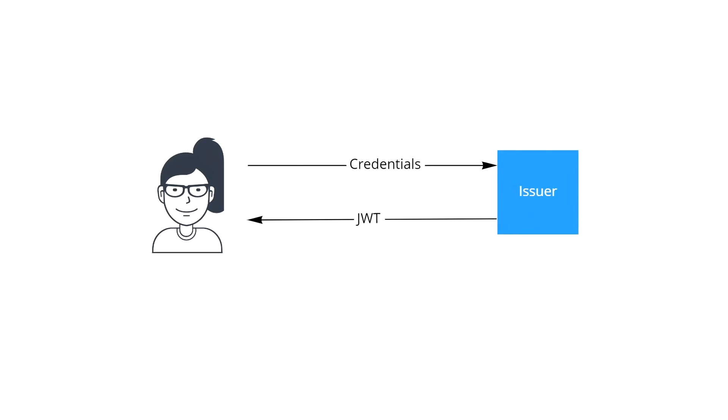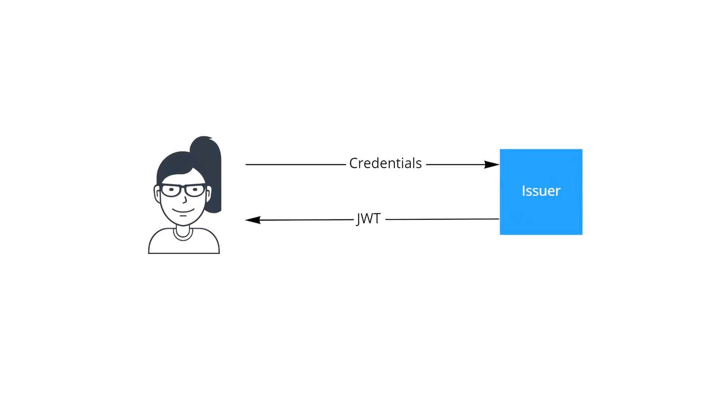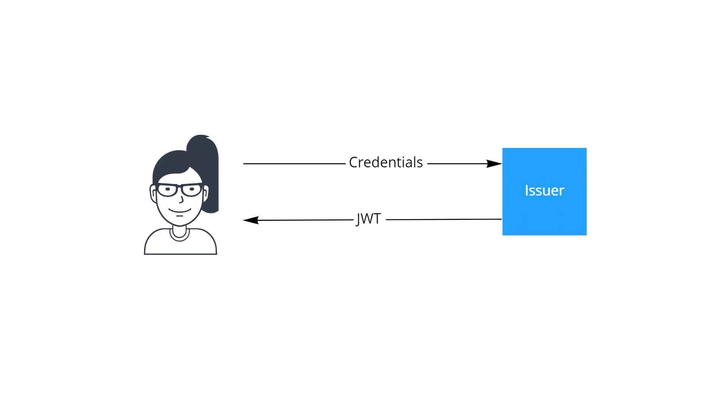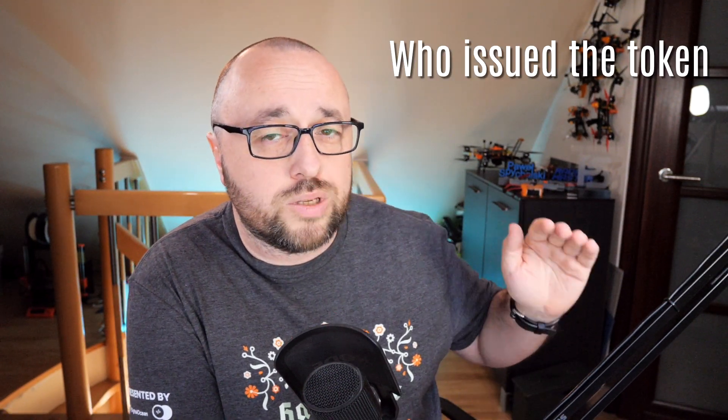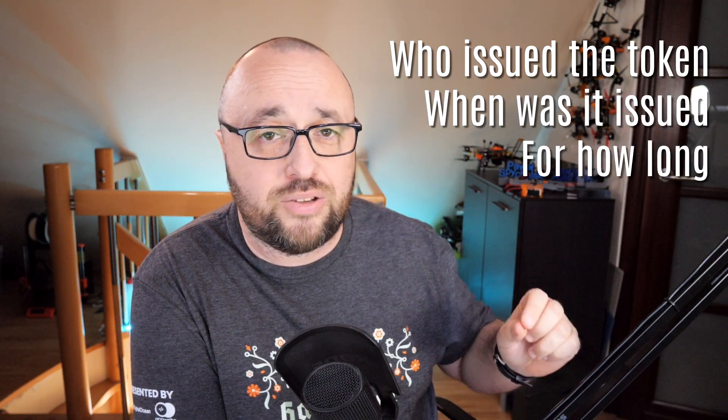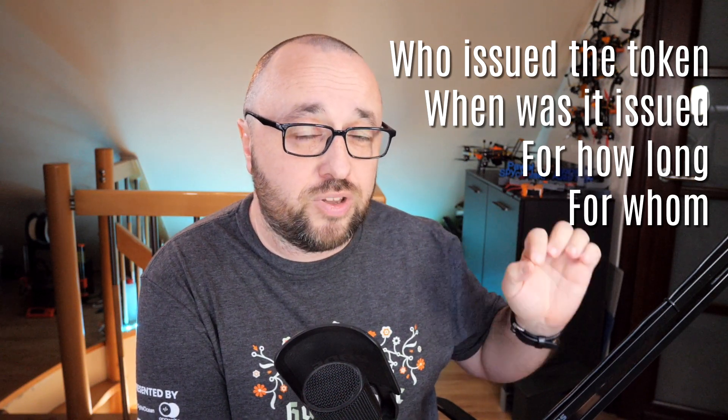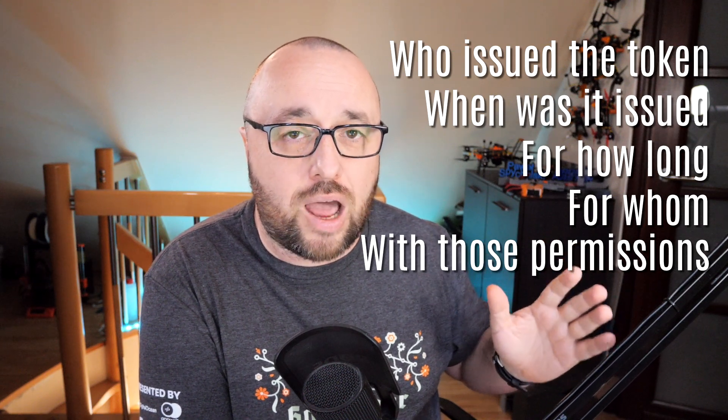In the JWT setup, one of the servers, called the issuer, is responsible for the user and the identification of the user. The issuer holds the users, the roles, and the permissions, and it is the system that verifies user credentials. When the user sends the username and password, the issuer runs authentication — it verifies if the user exists, if the password matches, if the user is allowed to log in, and ultimately issues the JWT token for that user. The JWT itself holds the user's identity, essentially saying: this token was issued by this issuer on this date, is valid for so long, was issued for this specific user, and these are the roles and permissions granted.